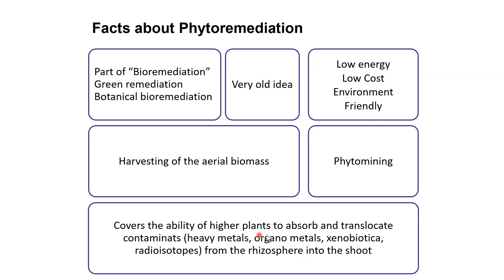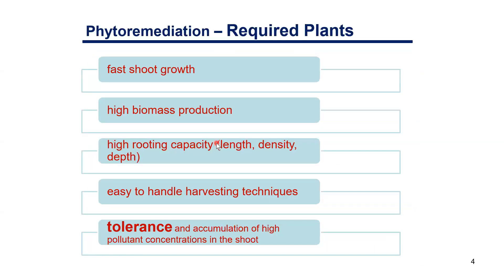Phytoremediation covers the ability of higher plants to absorb and translocate contaminants — heavy metals, organic metals, xenobiotics, and radioisotopes — from the rhizosphere into the shoot. All contaminants taken up by the root system must be translocated to the aerial biomass, because we cannot remove roots from the field; the target is to get contamination into the harvestable aerial part.